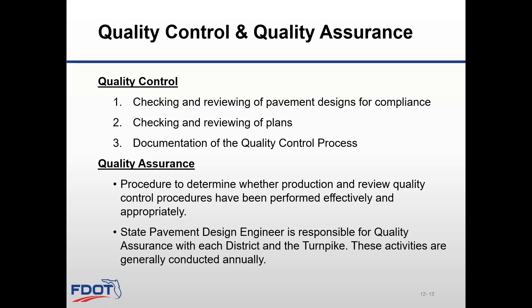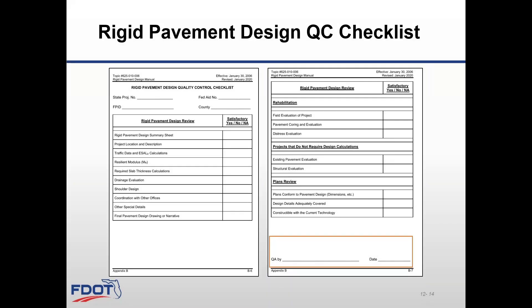The state pavement design engineer will be responsible for conducting and coordinating all pavement-related QA activities with each district and the turnpike. A QA review for district pavement activities will generally be conducted annually. The following rigid pavement checklist needs to be included in every pavement report. This checklist outlines all the design steps needed to be included in the report and helps maintain consistency for all reports prepared for FDOT — this is an important step outlined in the Rigid Pavement Design Manual, Appendix B, section B5.